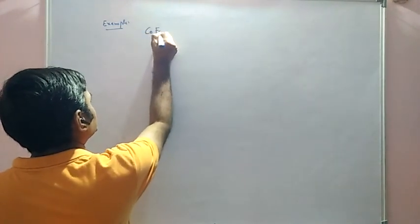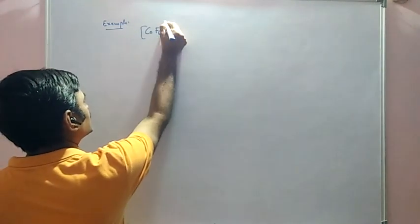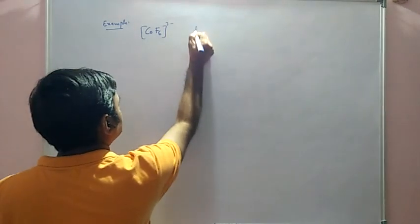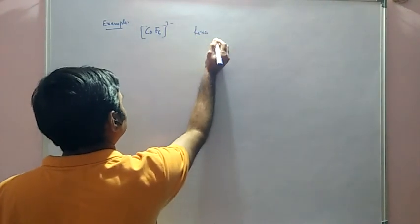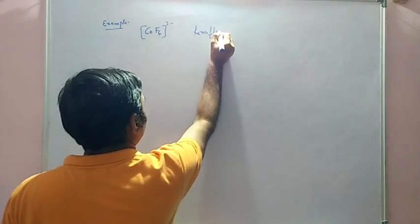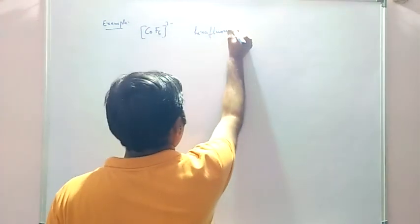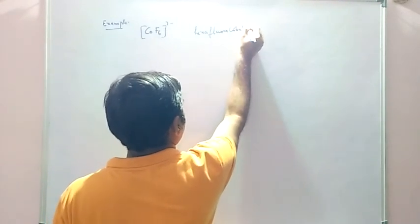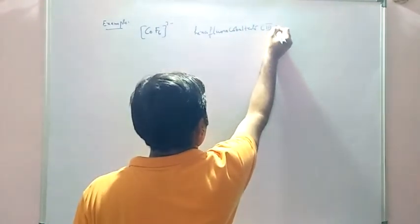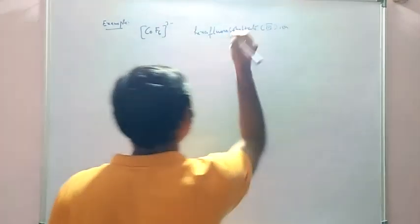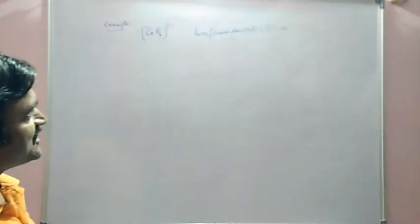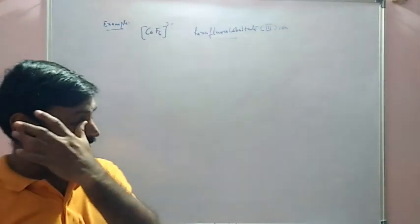Let us see CoF6 3-. This is called hexafluorocobaltate(III) ion.